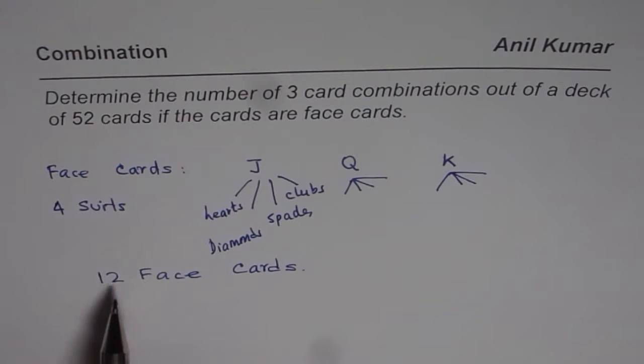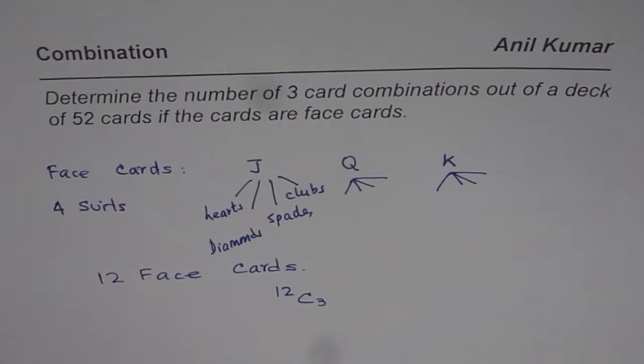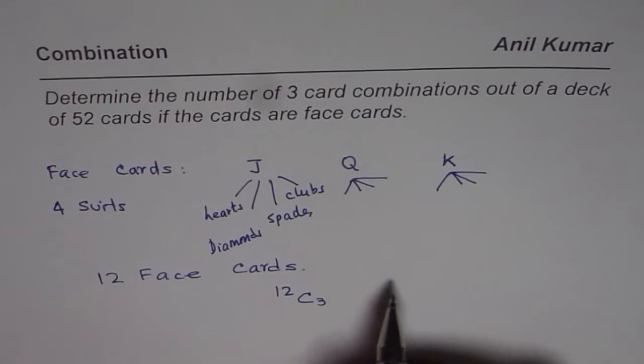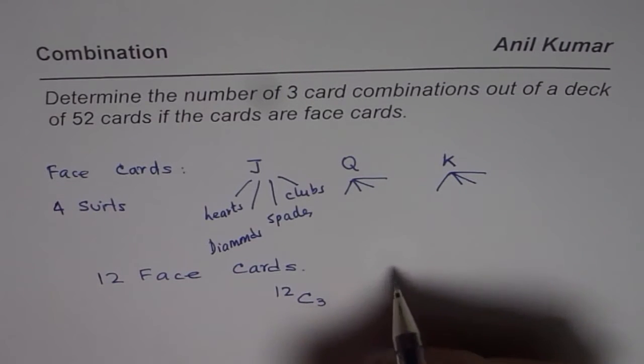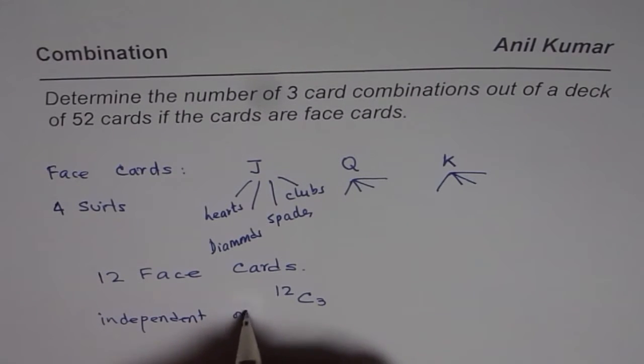So it is from 12. So 12C3 becomes the answer. It is a case of combination since this hand of 3 cards, order may be anything, it doesn't matter. It is independent of order. So in this case, since it is independent of order, it is a case of combination.